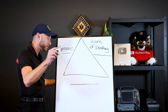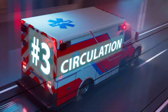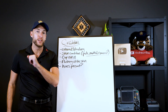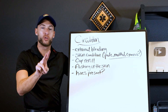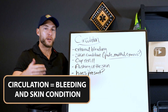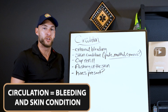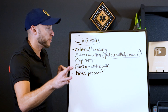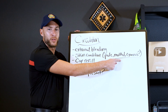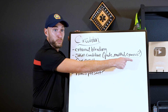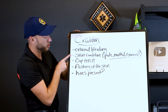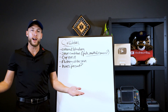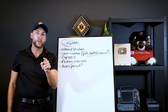Our last stage of the pediatric assessment triangle — PAT — is circulation. Circulation is very simple; it comes down to two main things: bleeding and skin condition. From across the room I can see flushing of the skin, hives, pale skin, mottled skin, or cyanosis — blue or gray skin. So external bleeding and skin condition are key. You can also check a quick capillary refill and check for flushing of the face. As a bonus, check for hives, as it's one of the first signs of an allergic reaction.